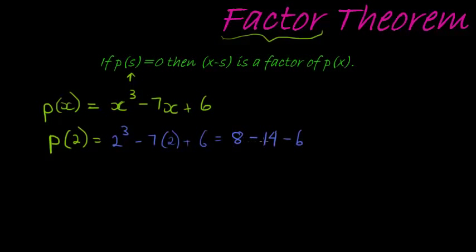Now, 8 minus 14 is, sorry, that's plus 6. 8 minus 14 is minus 6 plus 6 is equal to 0. Okay, so I found that p of 2, or 2, substituting that into my polynomial gives me 0.